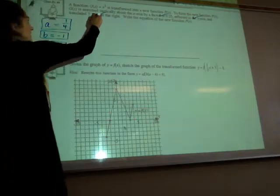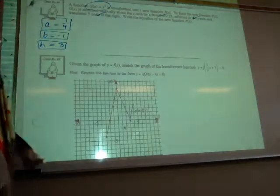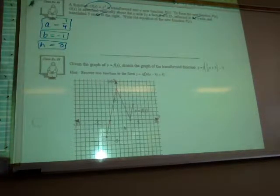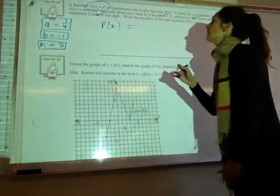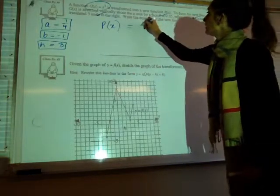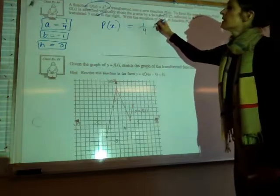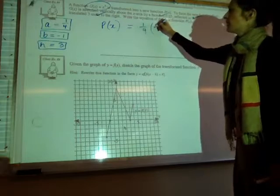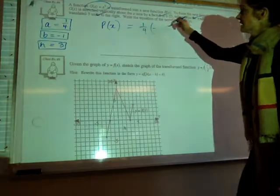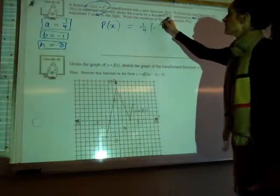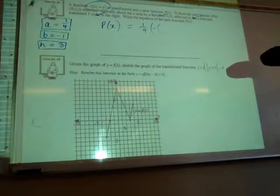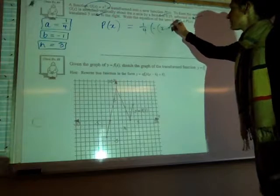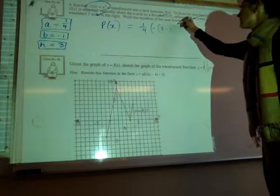If my original equation was X cubed, I have to apply these stretches, reflections, translations to that original function. So, P of X, which is our new graph, will be 1 quarter. And then we're stretching by a negative. We're reflecting, sorry. So, we need a negative outside. And we're moving it 3 units to the right. So, it's going to be X minus 3. That's all cubed.